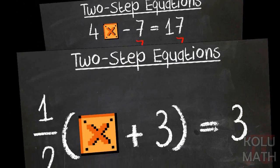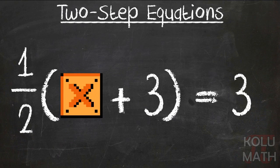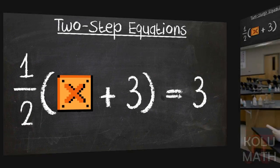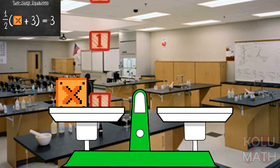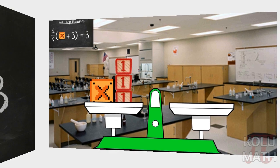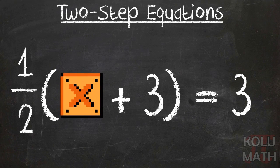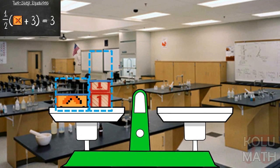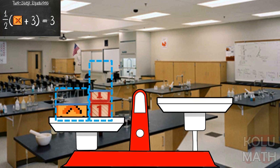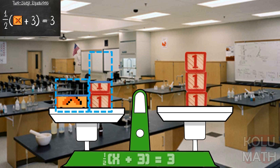Let's take a look at a different type. We've got one half times the quantity x plus 3 equals 3. This one looks a little scary, but let's bring it over to the scale and model it. We've got x plus 3 on the left-hand side, and look back at the equation — there's that one half sitting out front. So let's take one half of x and one half of 3 ones. And on the right-hand side, we have 3 ones. Those drop in and we've got a balanced equation.